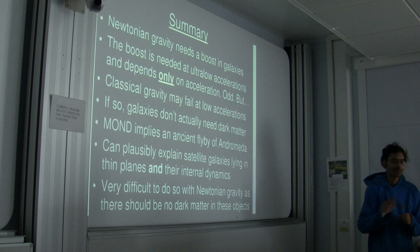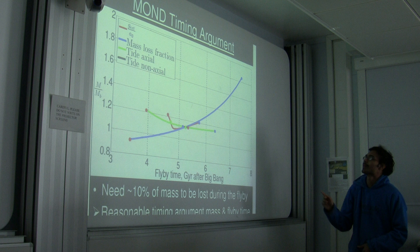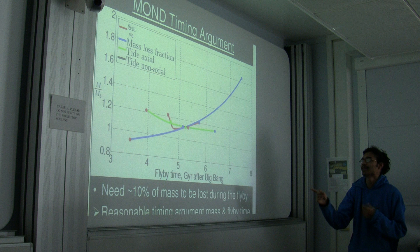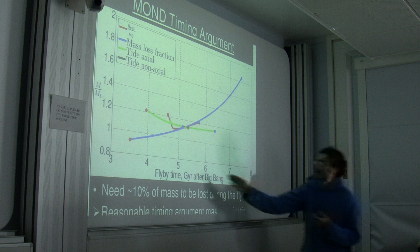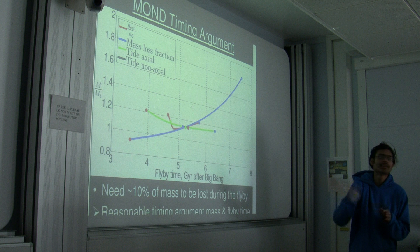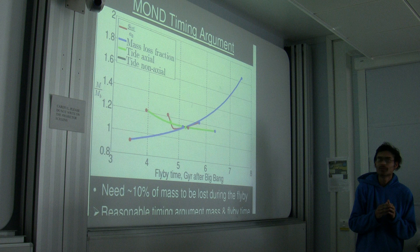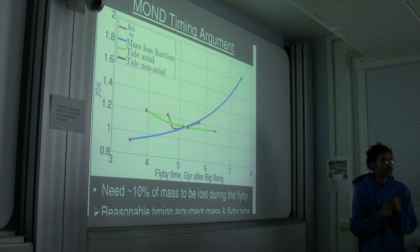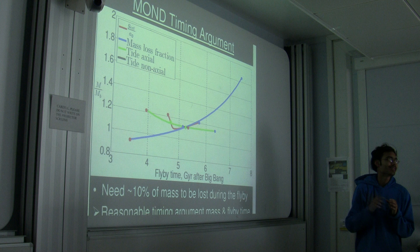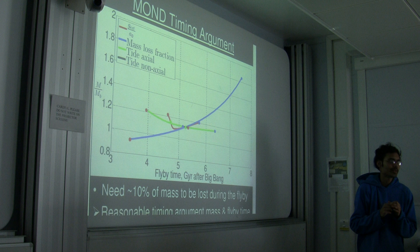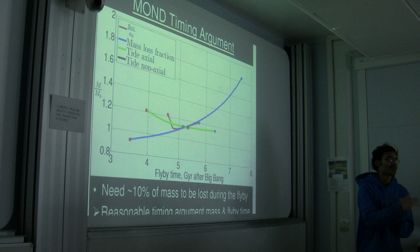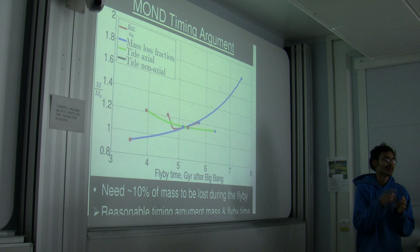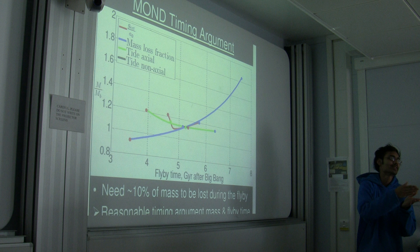When I did the timing argument with modified Newtonian dynamics and changed various parameters, you get a constraint on when the flyby needs to have been — and you can't push it back earlier than about four billion years after the big bang. That might be a problem. But remember, when you form a satellite galaxy you might pull out stars from the Milky Way which are already formed. The problem is the chemistry: the abundances of globular cluster stars and dwarf spheroidal stars are much poorer in metals than the stars in the disk. If you're going to pull out such stars, you have to do that very early before much metal-enrichment, or from the outskirts of the Milky Way where there isn't much metal-enrichment at very early times. Also, a lot of the globular clusters are actually in the planar structure being discussed.